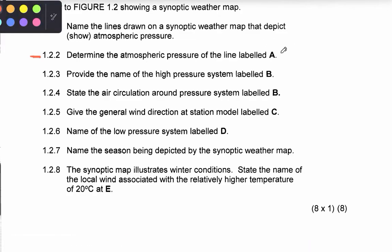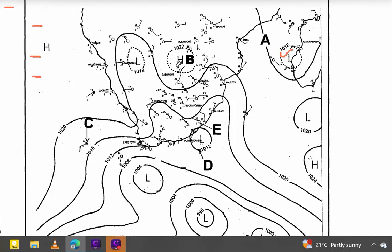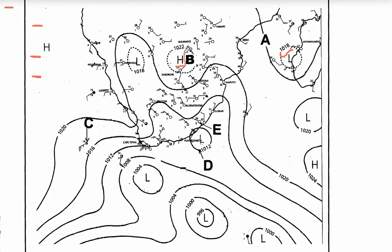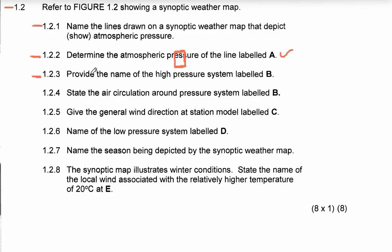Let's move to 1.2.3: provide the name of the high pressure system labeled B. This high pressure system is located in the interior of South Africa. Therefore, it is called the Kalahari High, also known as the Continental High or Kalahari Anticyclone. That is the answer for 1.2.3.